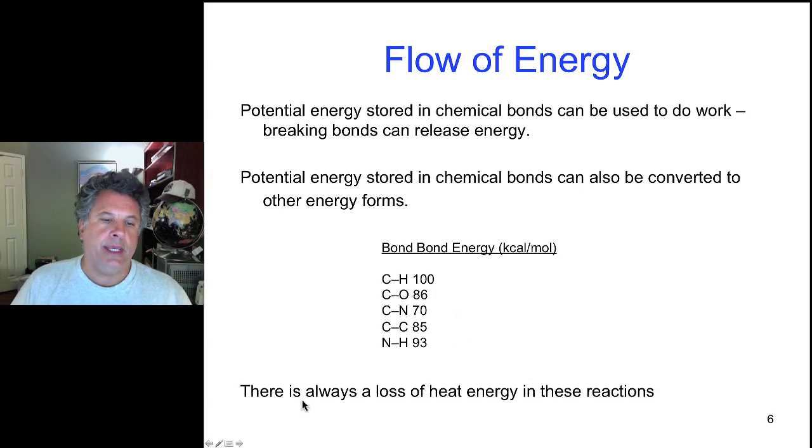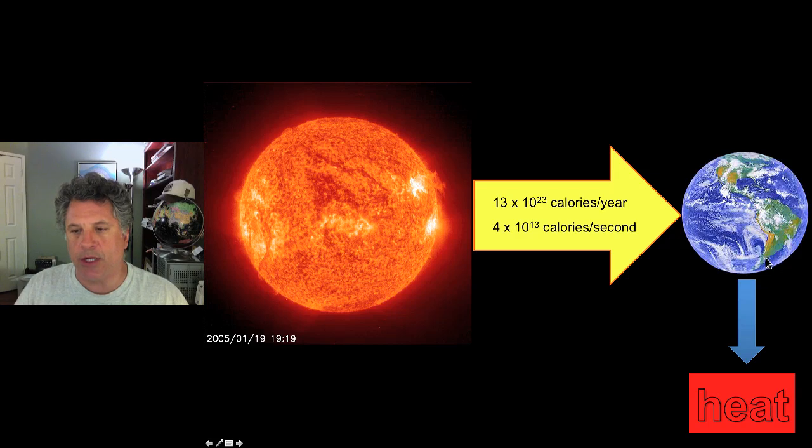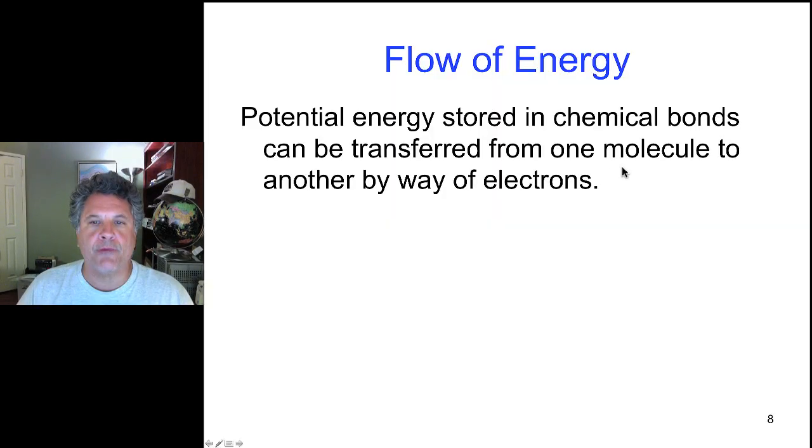Now when chemical bonds are broken to do work, there is always a loss of heat energy in those reactions. So some of the energy is always lost to heat. And if you look at this in terms of the sun supplying the earth with energy, every biological transformation of energy causes a loss. Some of the energy is lost as heat. And that's supplied though—that lost heat is resupplied by energy coming in from the sun.